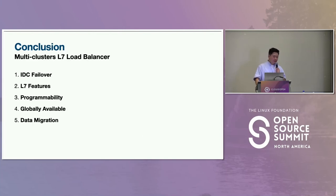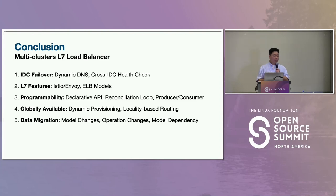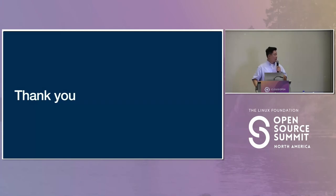To summarize, we shared five challenges when building an L7 load balancer: IDC failover handled with dynamic DNS and cross-IDC health check; L7 features using Istio Envoy and ELB model design; programmability via declarative APIs, reconciliation loop, and producer-consumer method; global availability through dynamic region provisioning and locality-based routing; and data management challenges addressed through migration APIs and consistent data principles. Thank you for listening.